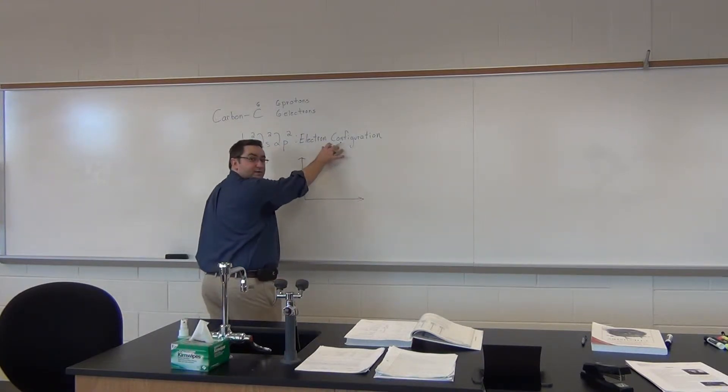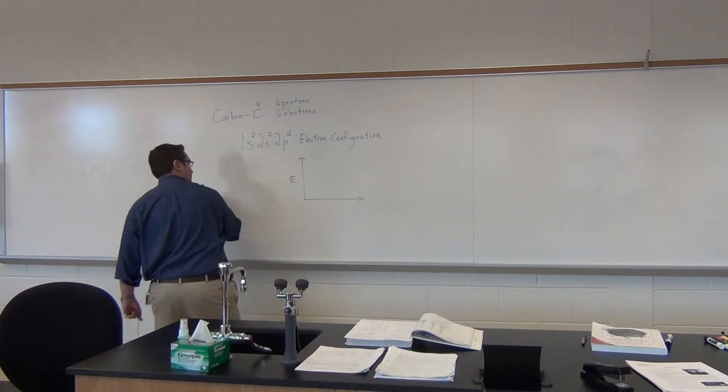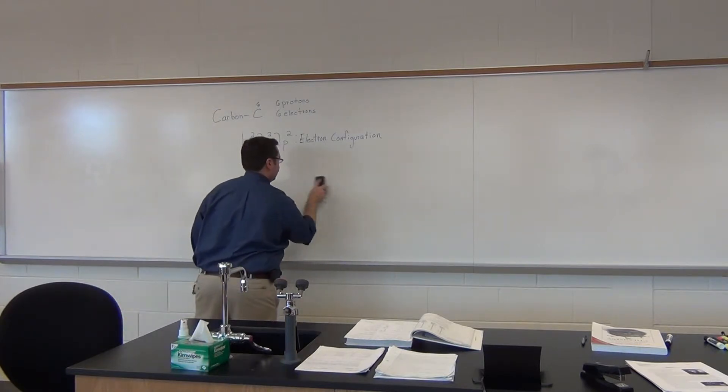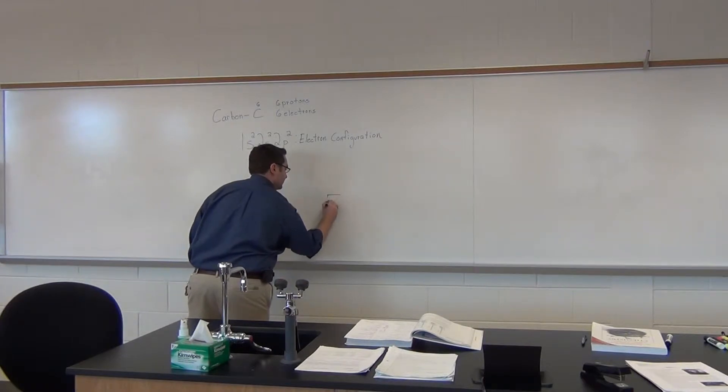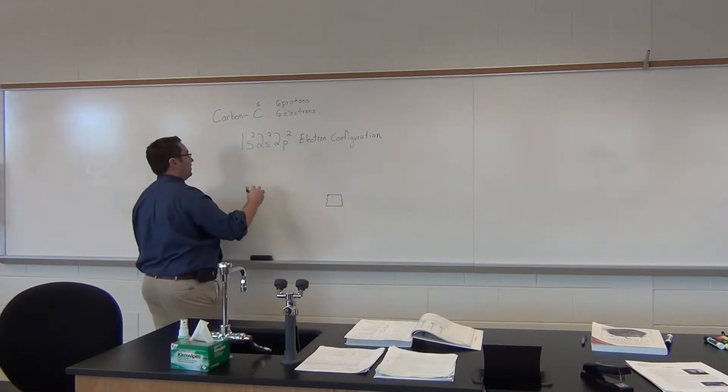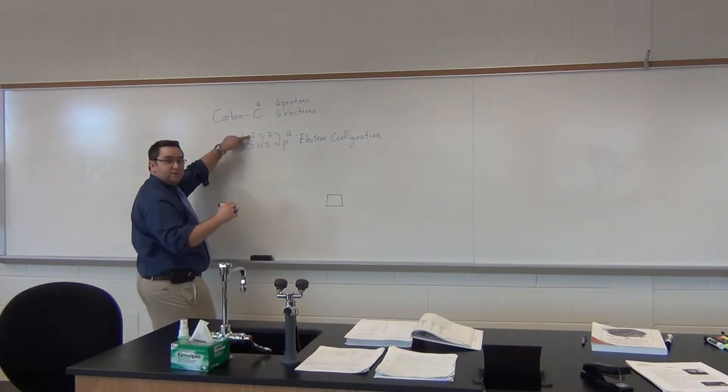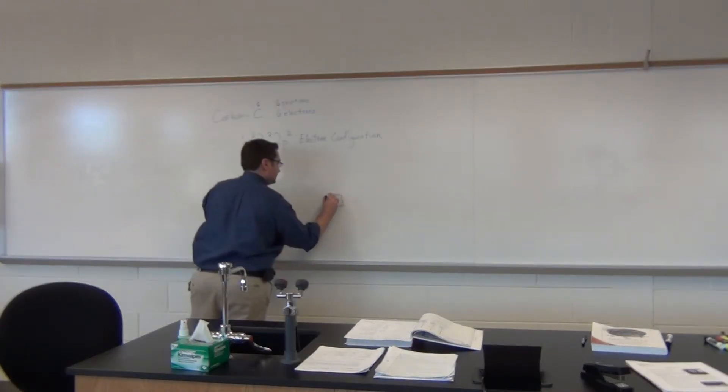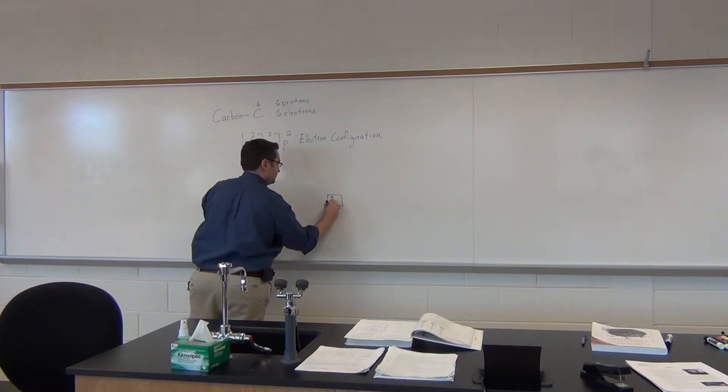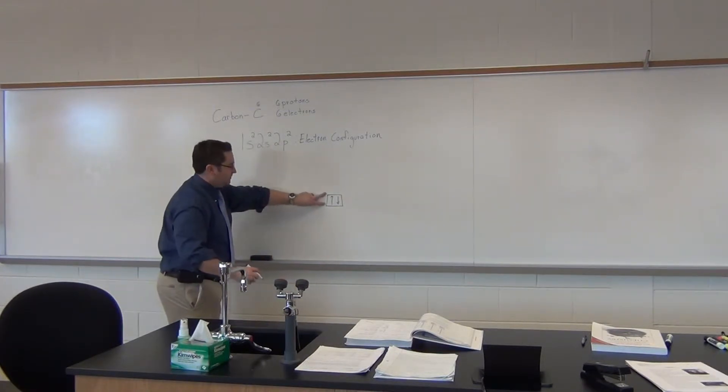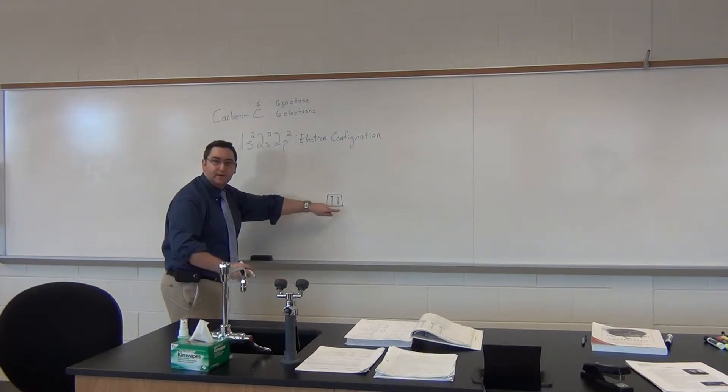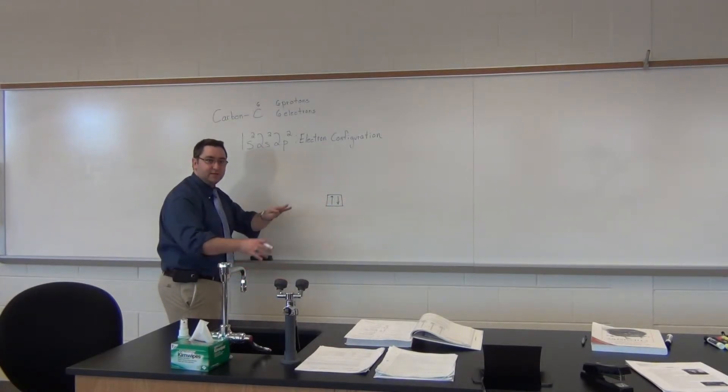So let me show an example of that. The 1s, the 1s², is going to hold a maximum of two electrons, and you'll usually have it denoted as one up and one down because they have opposite spin.